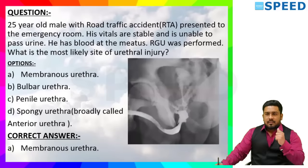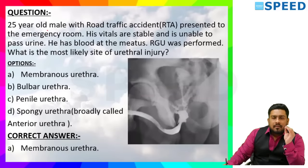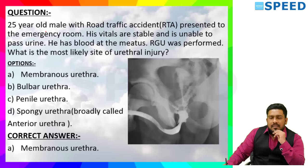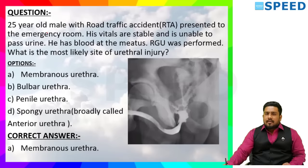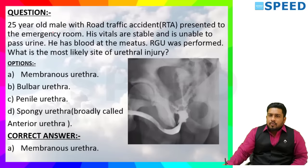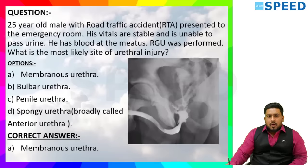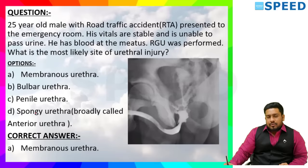Next question: A 25-year-old male with a road traffic accident presented to the emergency room. His vitals are stable and he is unable to pass urine. He has blood at the meatus tip. Retrograde urethrogram was performed. What is the most likely site of urethral injury? The options are membranous urethra, bulbar urethra, penile urethra, and spongy urethra.